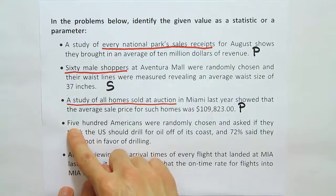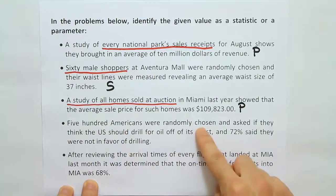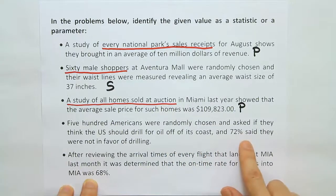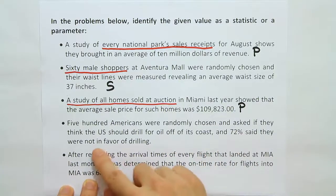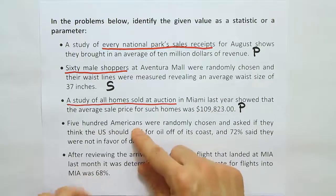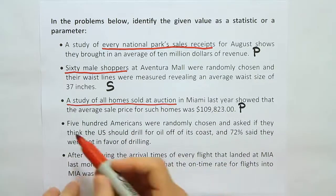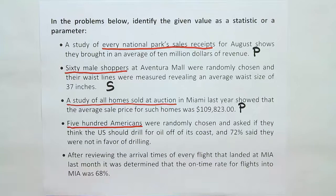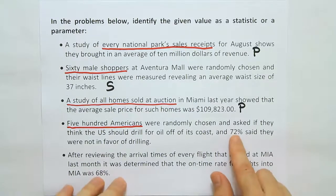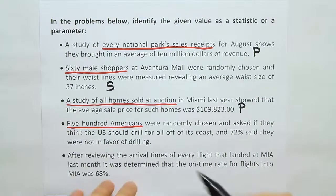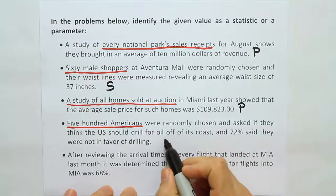'500 Americans were randomly chosen and asked if they think the U.S. should drill for oil off of its coast, and 72% said they were not in favor of drilling.' 500 Americans is certainly not the entire population — this is just a sample. So the thing they calculated from it, in this case a proportion, turns out to be a statistic.